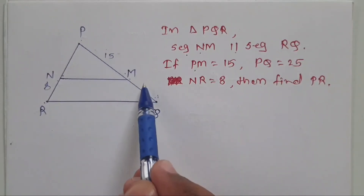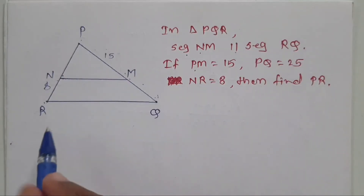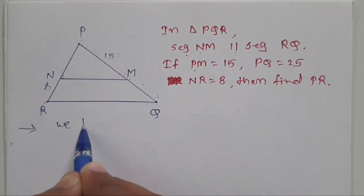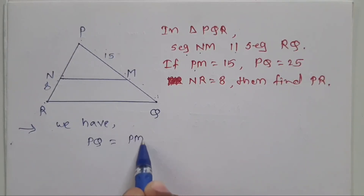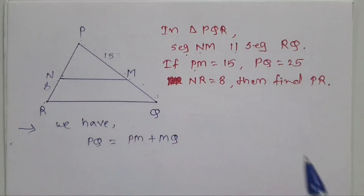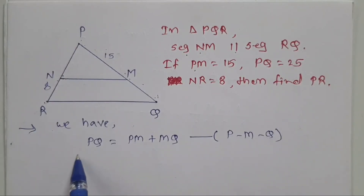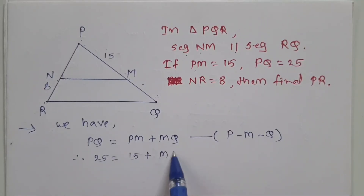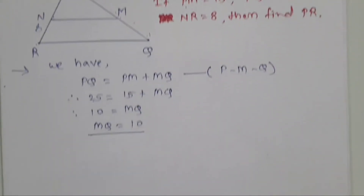Since PQ is given and PM is given, we can find MQ. We have PQ equals PM plus MQ, since P, M, Q are collinear points. So PQ is 25 equals PM 15 plus MQ. Transferring 15 to the other side: 25 minus 15 equals 10, so MQ is equal to 10.